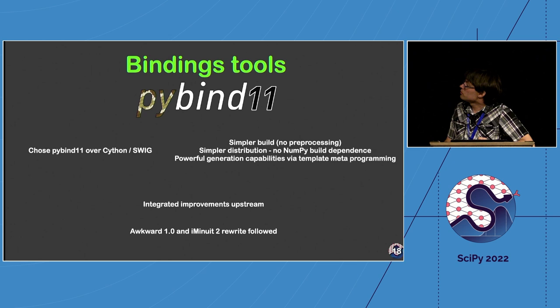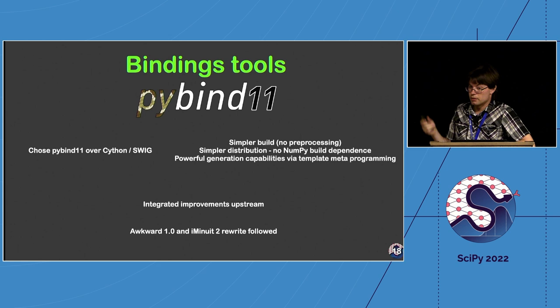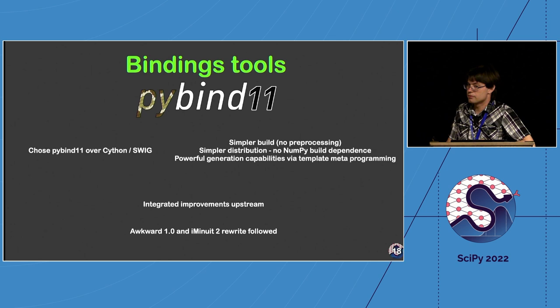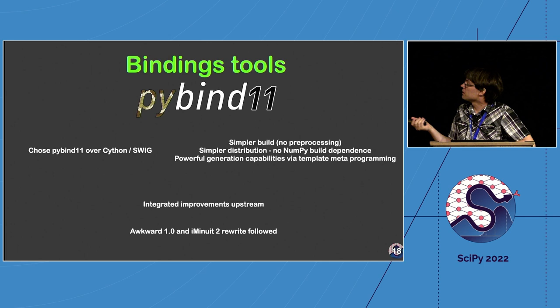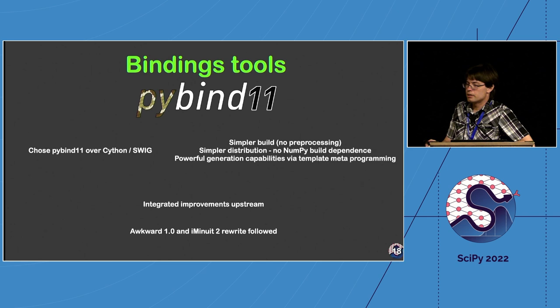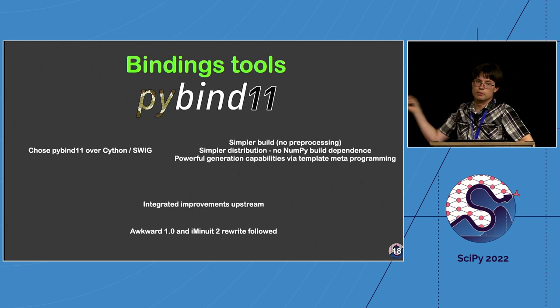PyBind11 was chosen for the binding tools. We had experience with PyBind11, Cython, and SWIG, and PyBind11 fit our needs very well: it has a very simple build — you don't have to pre-process or Cythonize things. The distribution story is very good; you don't need a particular version of NumPy already on the system to build. It also has very powerful templating since it's really just C++, and you can use C++ templates to generate bindings. We ended up integrating many improvements upstream and now have shared maintainership. Both Awkward 1.0 and Minuit 2 ended up moving over to PyBind11.